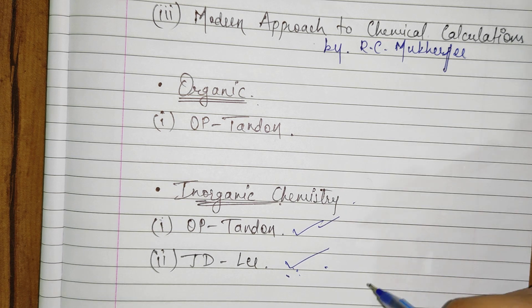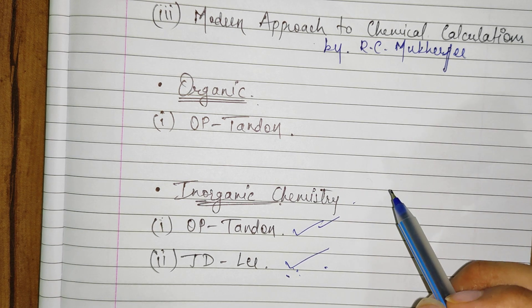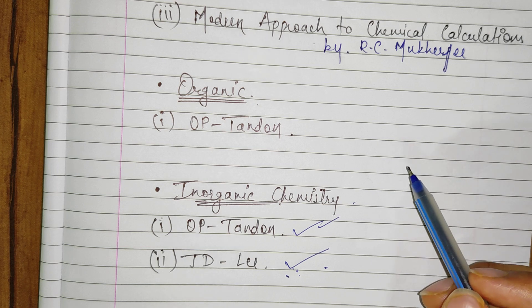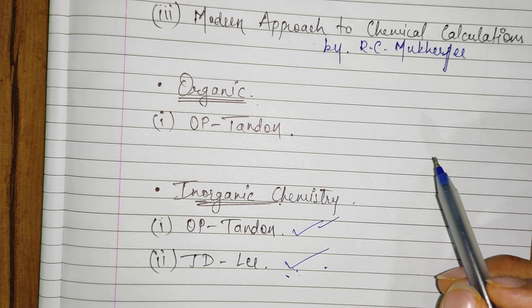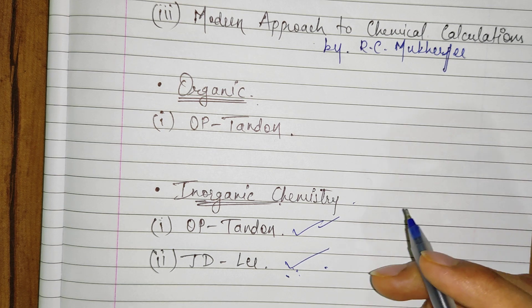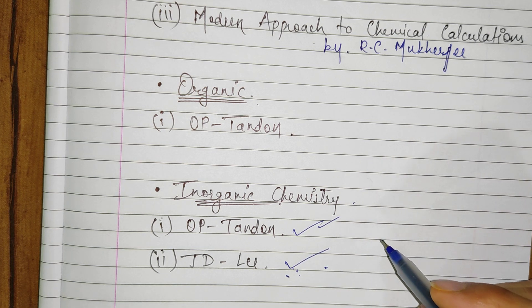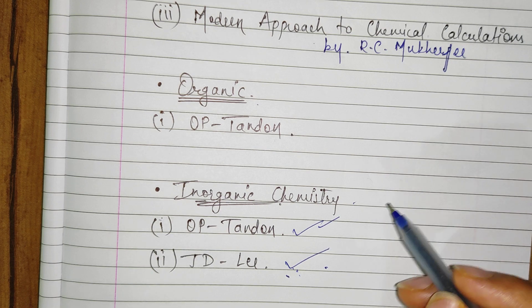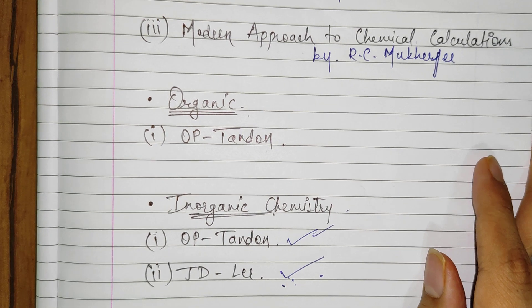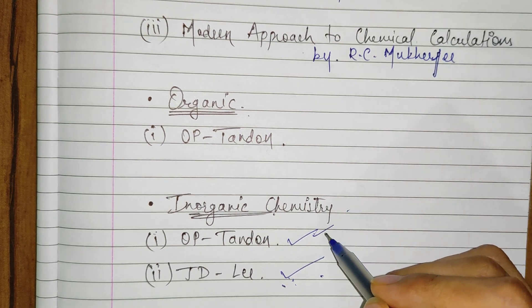And finally, you should solve all the previous year papers from around 2010. You can download these papers from the internet or you could even buy Arihant's 14 years solved papers for JEE mains and advanced. These papers are from 2006 to 2019. These are some of the books for JEE mains and advanced and these books are very helpful if you study them in the best possible manner.